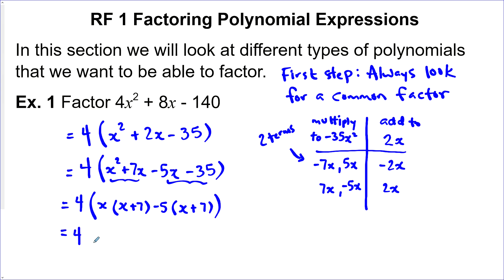Now last step, factor out the x plus 7. It's common here and here. So we can factor an x plus 7 out. Once that's gone, then all we're left with is x minus 5.